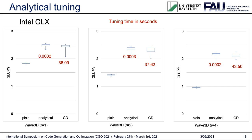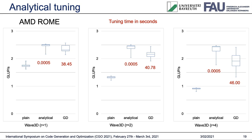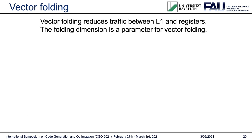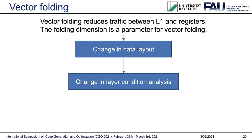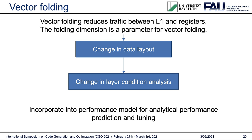Similar results can also be seen on the AMD ROME system. Another optimization which YASK uses is vector folding, which reduces the L1-to-register traffic. The folding dimension is a tuning parameter for vector folding. Depending on the folding dimension, an efficient implementation requires a change in data layout. This change in data layout means that a modification in layer condition analysis must be done, which can then be incorporated into the ECM performance model to predict and tune performance analytically.